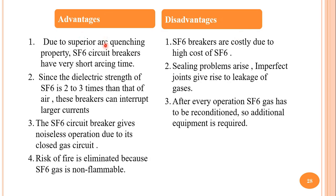The main advantages of SF6 circuit breakers are: due to the arc quenching property of SF6, operating time is very less; since the dielectric strength of SF6 is 2 to 3 times that of air, these breakers can interrupt large currents; SF6 circuit breakers give noiseless operation due to a closed gas circuit; and risk of fire is eliminated because SF6 gas is non-flammable. The main disadvantages are that it is costly due to the high cost of SF6, sealing problems arise as imperfect joints give rise to gas leakage requiring tight shielding, and after every operation the used gas has to be reconditioned, requiring additional equipment.